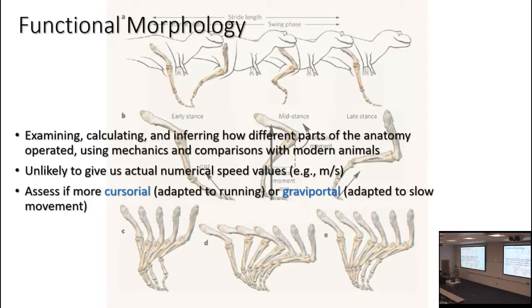Can we approach the issue of locomotion with other data? We can try with functional morphology — estimating, calculating, and inferring how different parts of the anatomy operated using data from mechanics and comparisons with modern animals. We might actually get numerical values; it's just our ability to say whether that's a realistic or precisely constrained value that may be limited. But we might be able to say something about whether the locomotion is more cursorial — adapted towards running — or graviportal — adapted to slow movement.